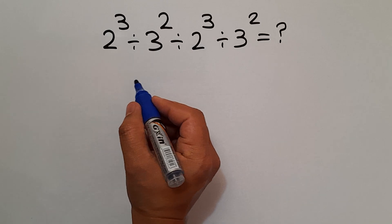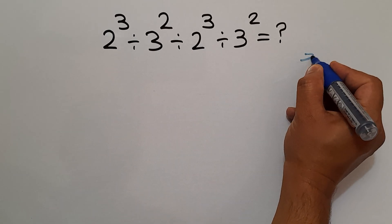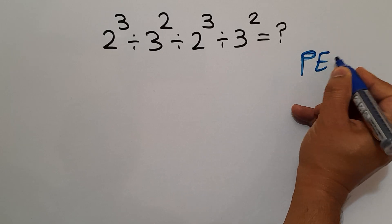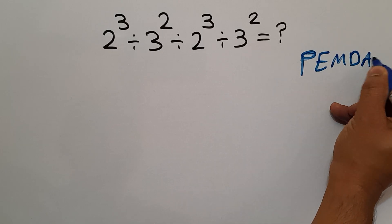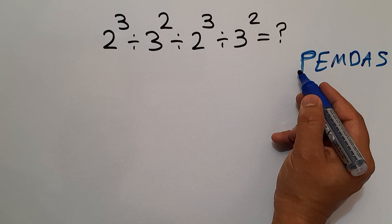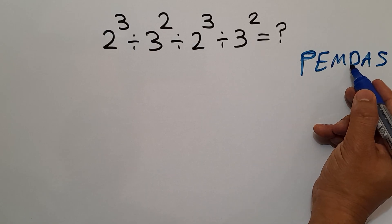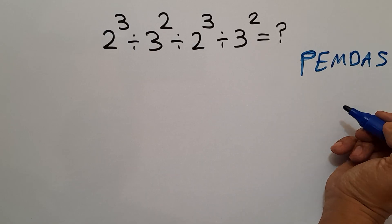As we know, according to the order of operations, which is PEMDAS, we first do parentheses, then exponents, then multiplication and division, and finally addition and subtraction.